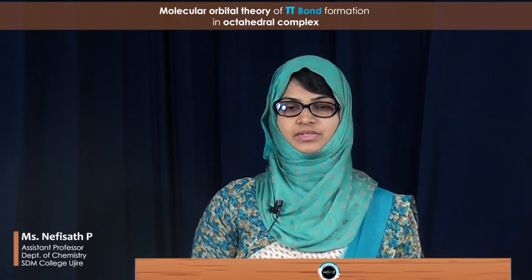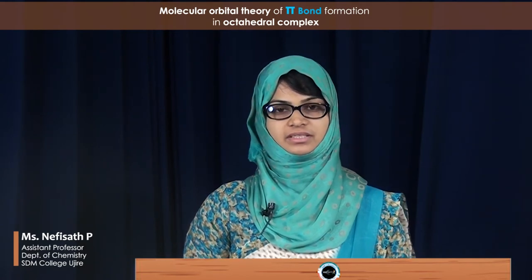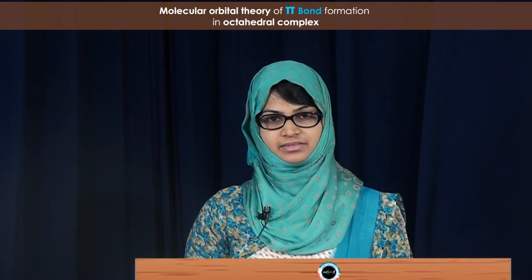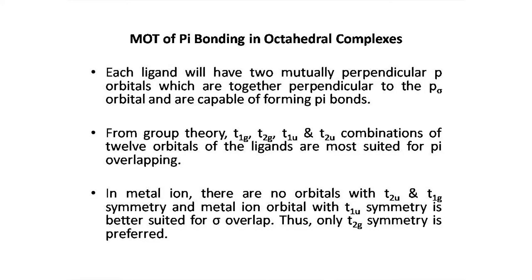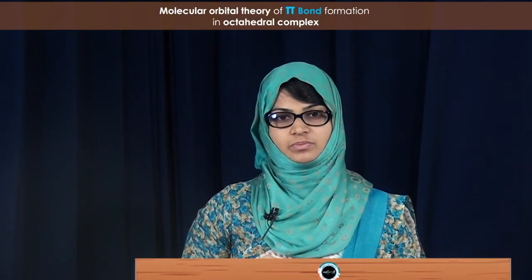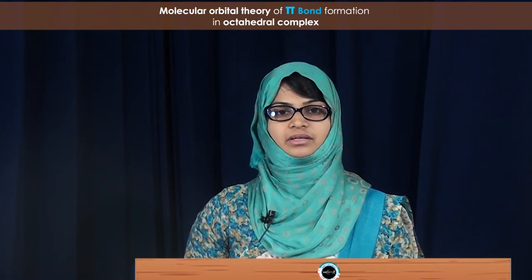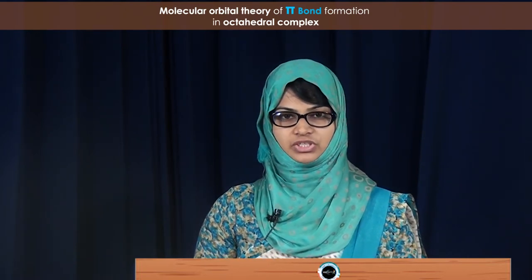We should study pi bond formation in octahedral complexes — that is, the molecular orbital theory of pi bond formation in octahedral complexes. Similar to sigma bond formation, pi bond formation also takes place in octahedral complexes. The p pi orbitals are provided by the 6 ligands; each ligand provides 2 p pi orbitals that are mutually perpendicular to each other and perpendicular to the sigma plane. In total, there is a contribution of 12 p pi orbitals from the 6 ligands.